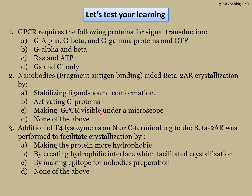Option B — activating G proteins — is wrong because nanobodies do not activate G proteins. Nanobodies were originally developed to stabilize a particular conformation of GPCR to facilitate crystallization. So option A is the right choice.